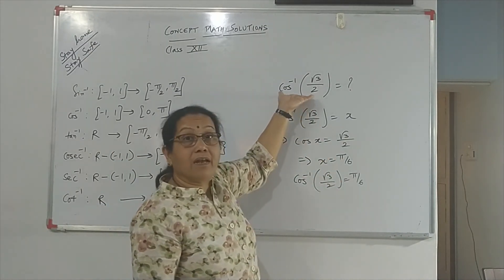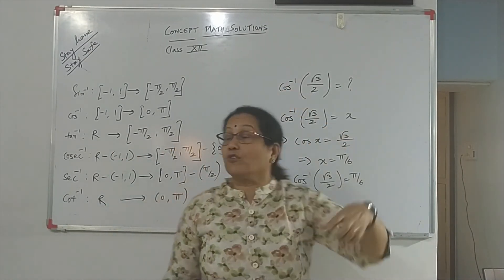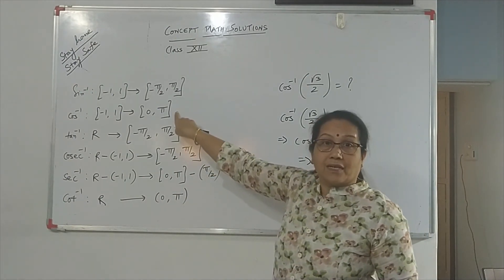So, whatever answer we get for cos inverse values, they should fall in the principal value branch.